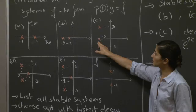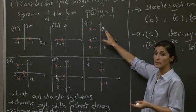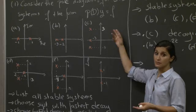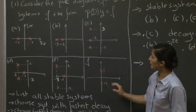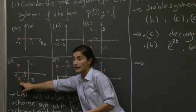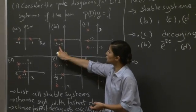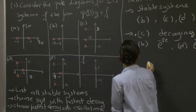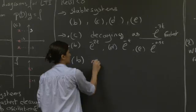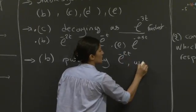For system C, there is a term e^(−3t), but the complex poles produce oscillations with circular frequency 3 — terms like e^(−3t)cos(3t) and e^(−3t)sin(3t). So system C shows oscillations and is excluded. Systems D and E similarly have complex poles, giving decaying oscillations. We are left with only system B, which shows pure exponential decay — e^(−2t) — without any oscillations.